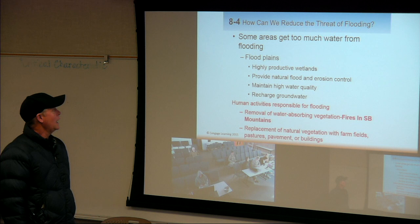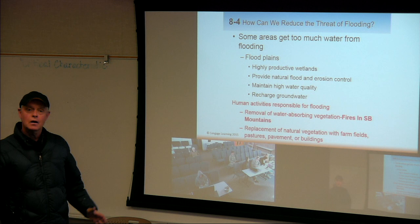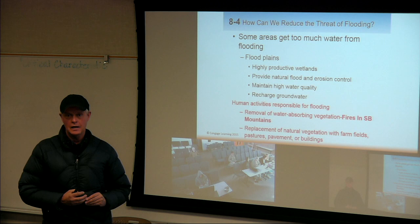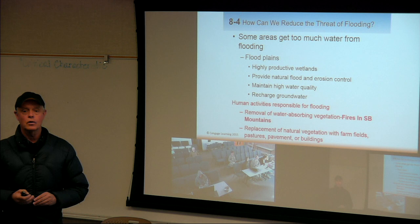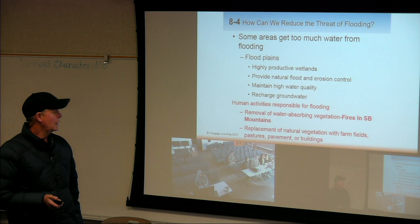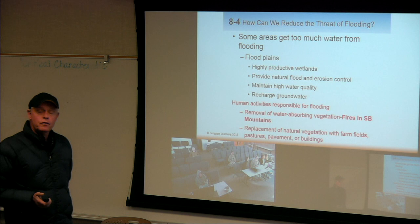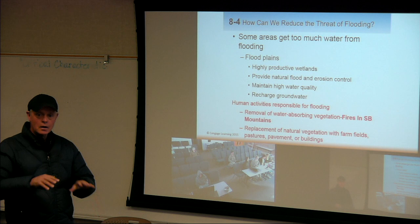How can we reduce the threat of flooding? We talked about how California, even this area with very low rainfall, gets it in sudden events. A couple years ago a fellow got so much rain up on the corner here at Peach that he got washed under the road and popped up in the lake at VVC — a pretty incredible story. How do we prevent it? It's all about floodplains — the area where a river floods out naturally.